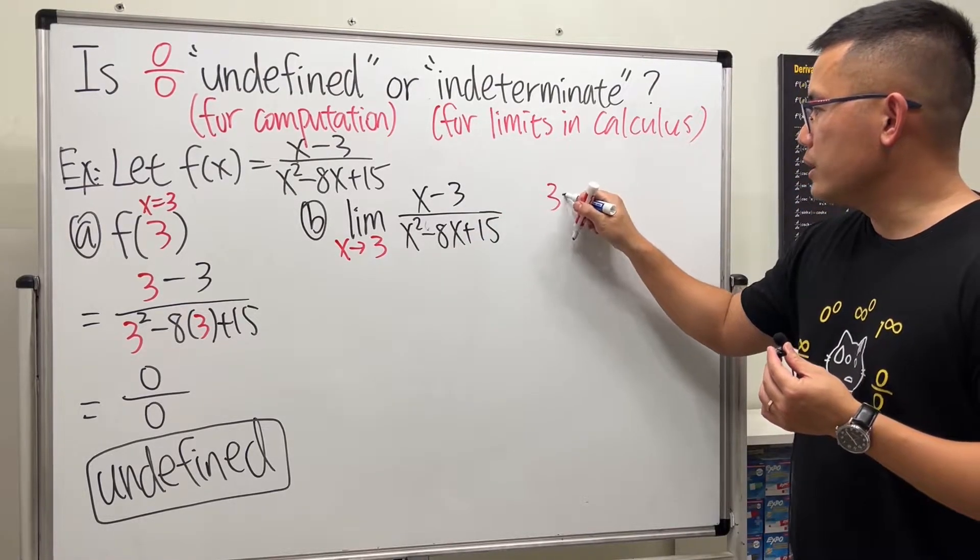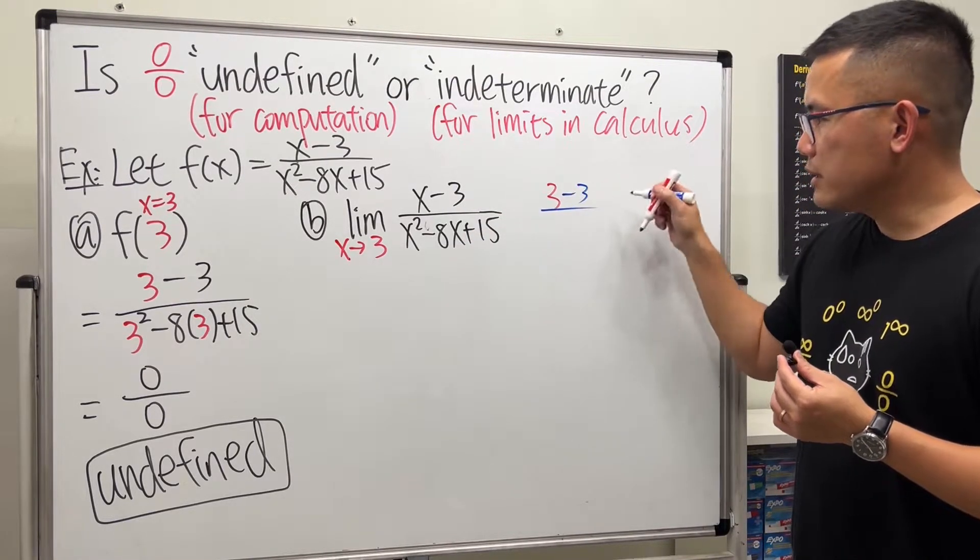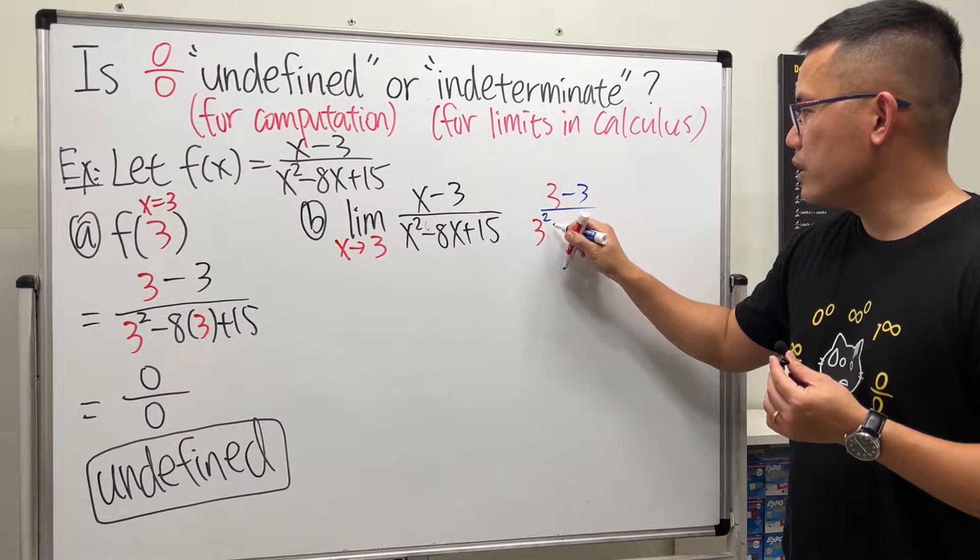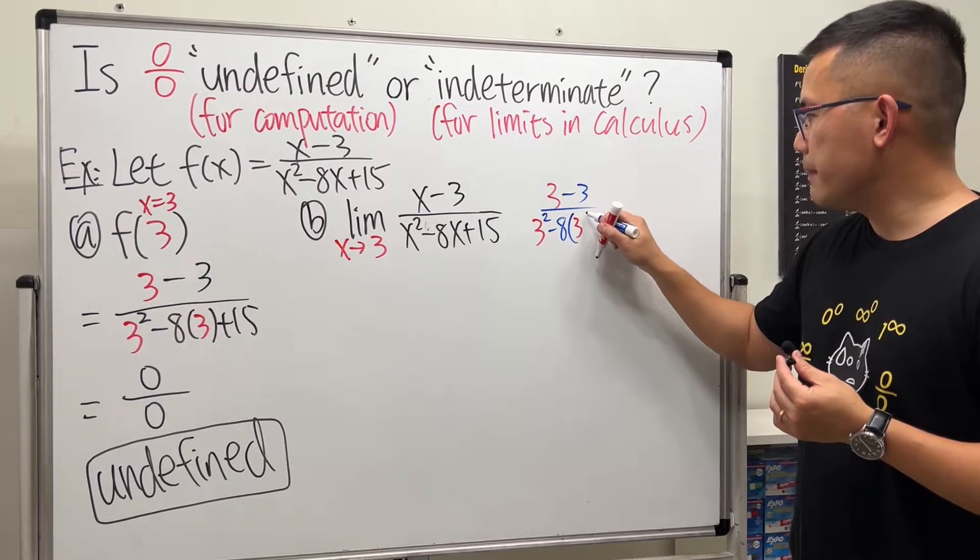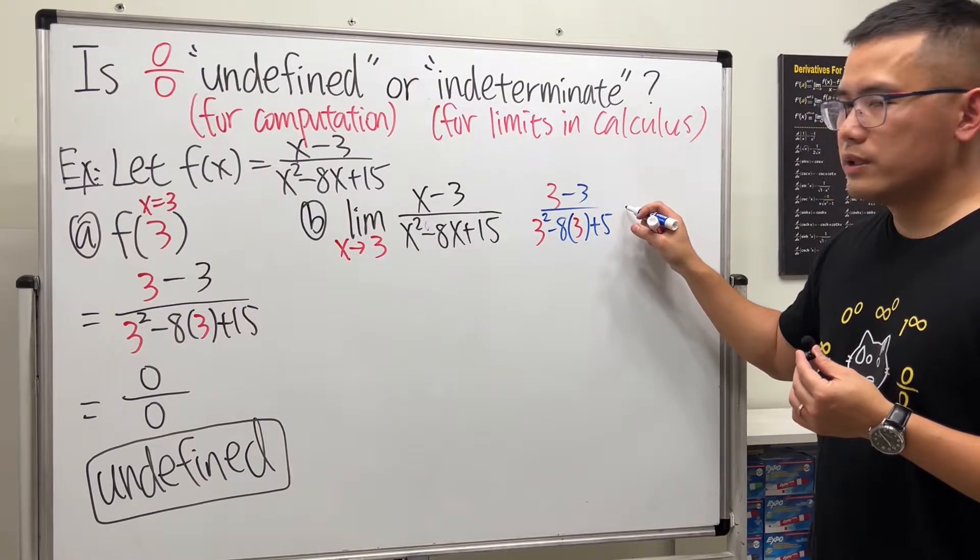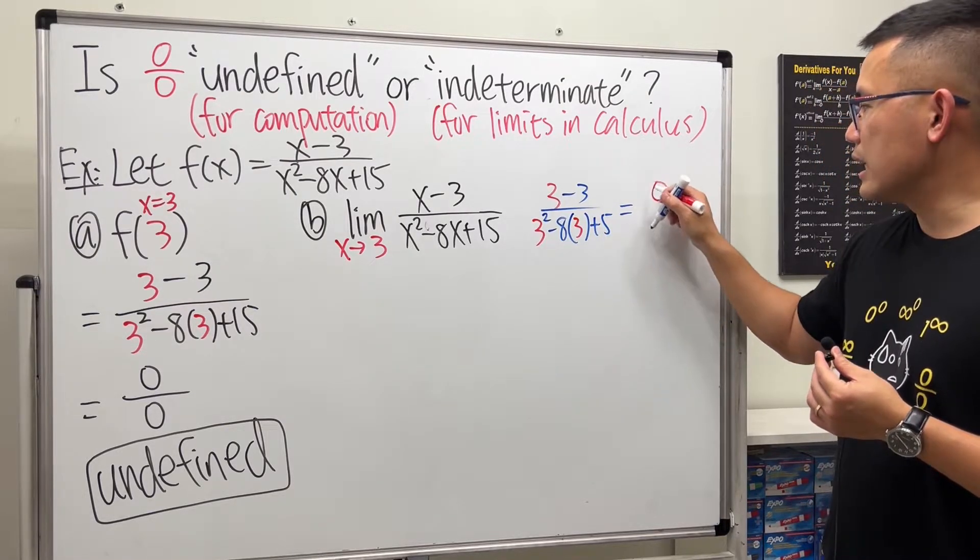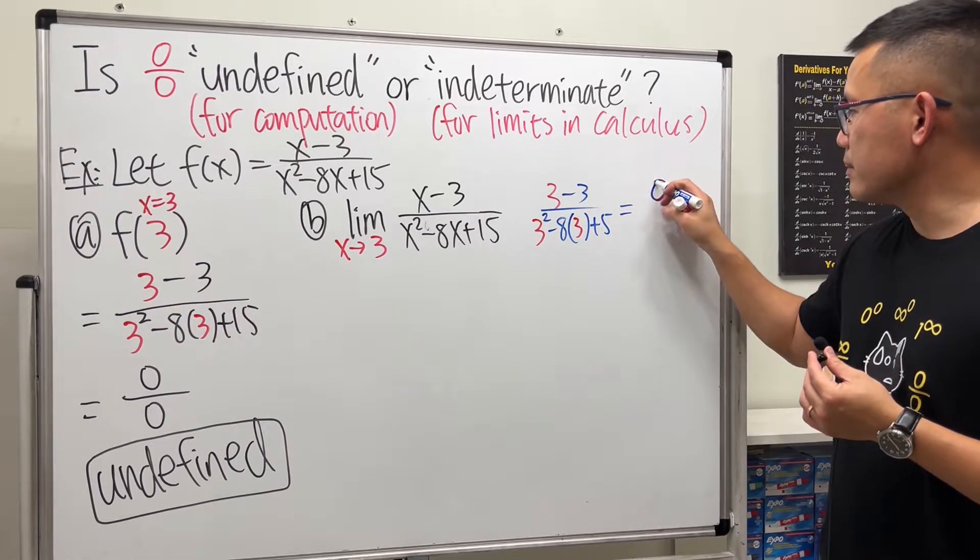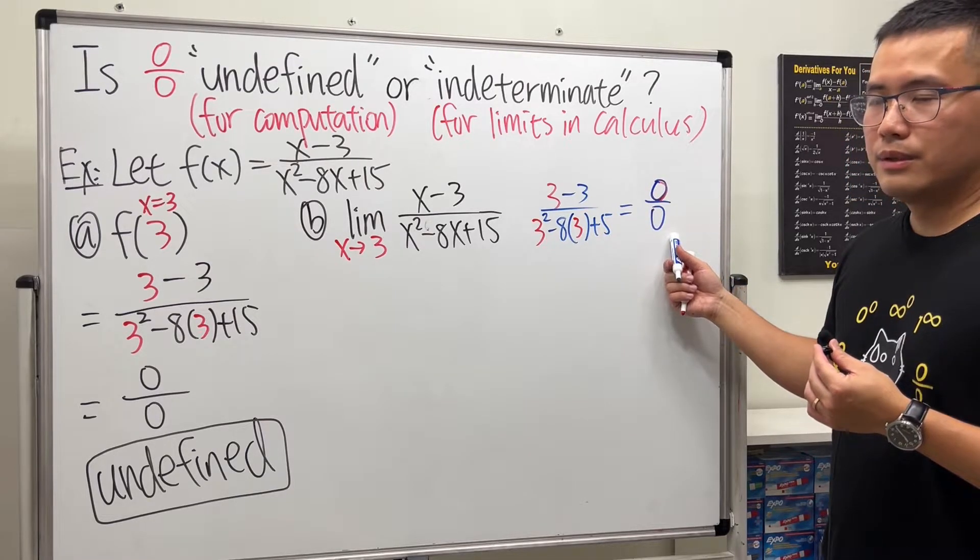But let's see: when we plug in 3 into all the x's, we get 3 minus 3 over 3 squared minus 8 times 3 and then plus 15. Of course, this will give us 0 on the top and then also 0 on the bottom. We did that over there already.